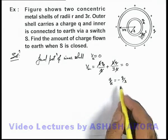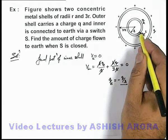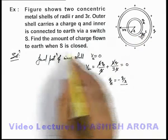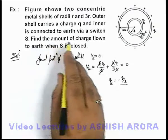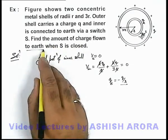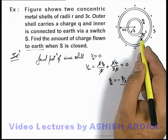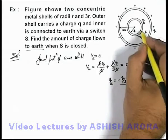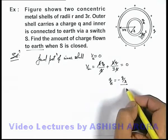This is the final charge on the inner shell supplied by earth. Now, we need to find the amount of charge flown to earth. If earth supplied a charge minus q by 3, that means from the shell to earth a charge plus q by 3 was supplied.